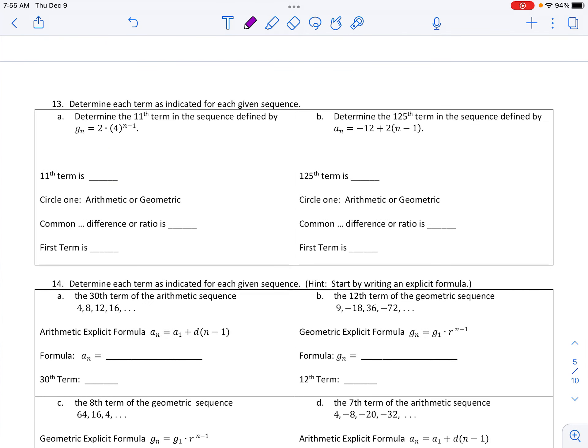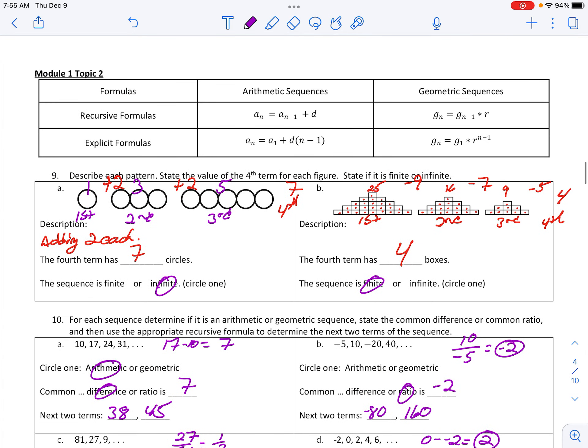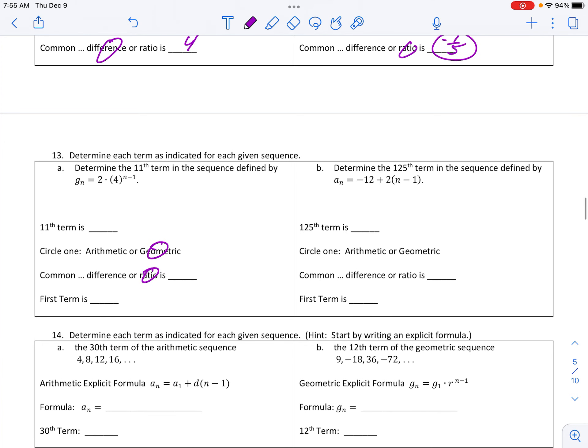Number 13. On number 13 here, we want to state what type of sequence we have, and then find the specific term. When I see it in this form, multiplication is happening, we have geometric. That means we have a common ratio. Go back up to the formula we stated for you. Geometric. This is the explicit formula. The first number is the first term of that sequence. R is my common ratio. So G1 is 2 with a common ratio of 4.